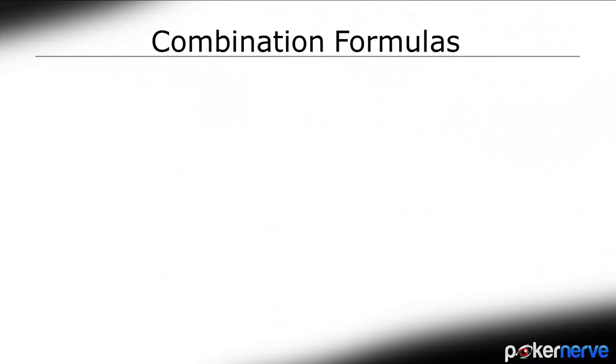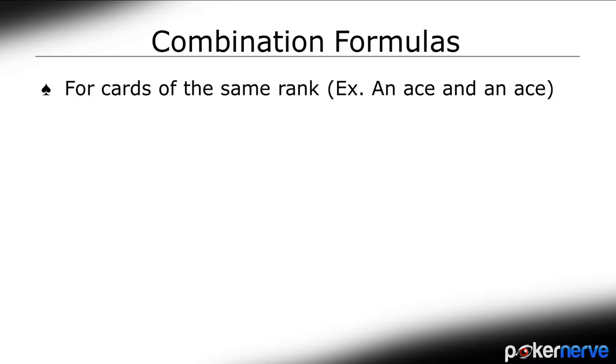What about for the Aces where we had 6 combinations? How can we work that out? Well, in this case, we are working out combinations of the same card. So we can't just multiply like we did with the Ace-King, where we have 2 different ranked cards coming together.